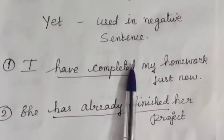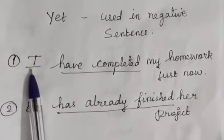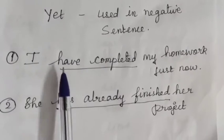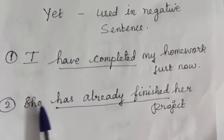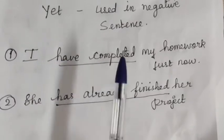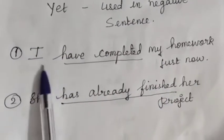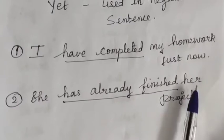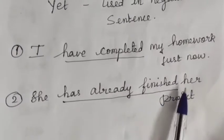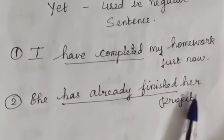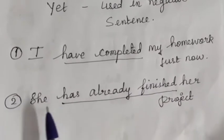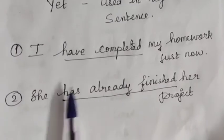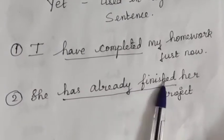With 'I' and 'you', we use 'have'. For example: 'I have completed my homework just now.' For singular third person, we use 'has'. For example: 'She has already finished her project.' With 'already', it comes in the middle of the sentence.